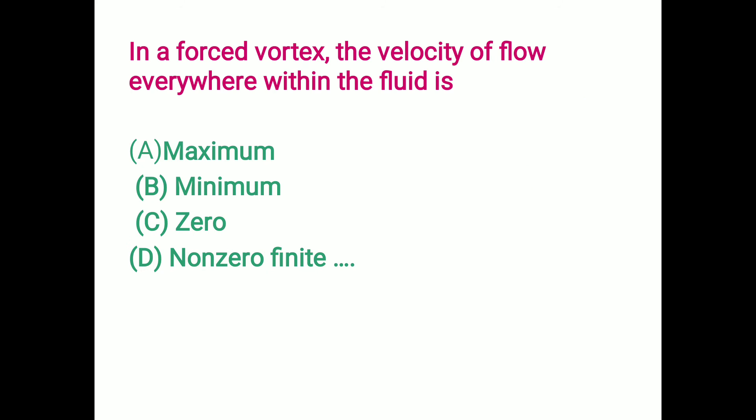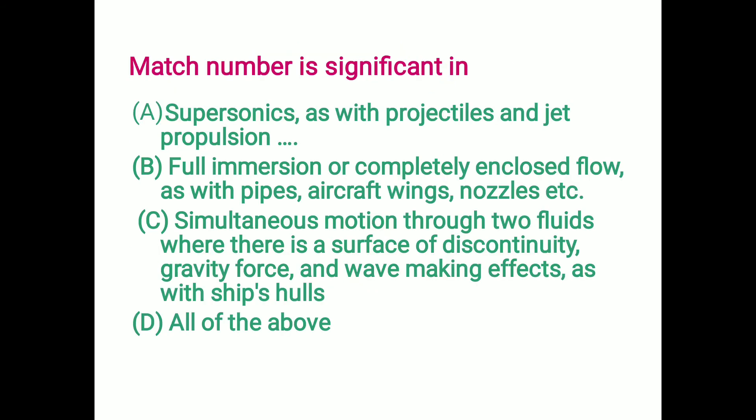In a forced vortex, the velocity of flow everywhere within the fluid is non-zero finite. Option D is the correct answer — in a forced vortex, velocity of flow everywhere within the fluid is non-zero finite.